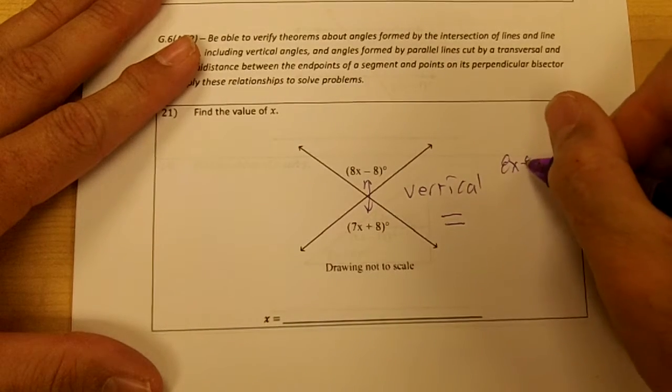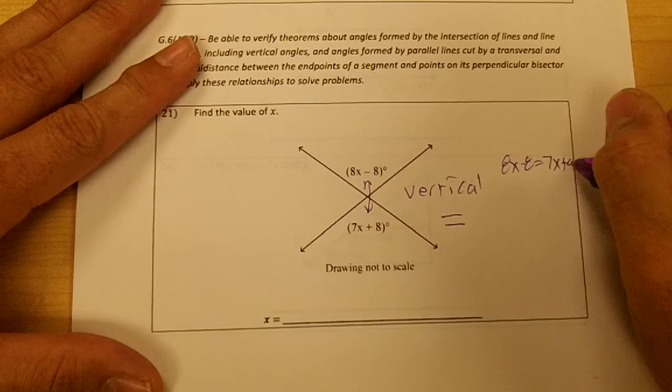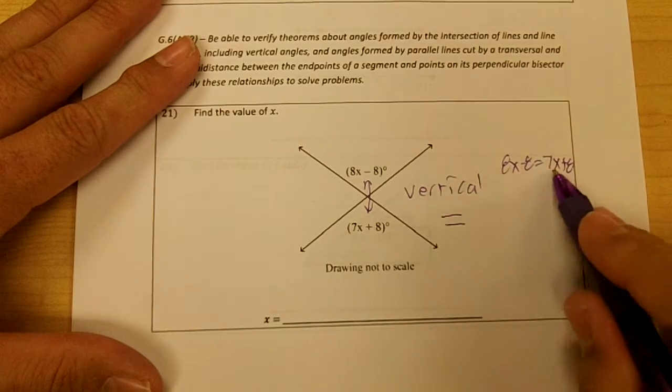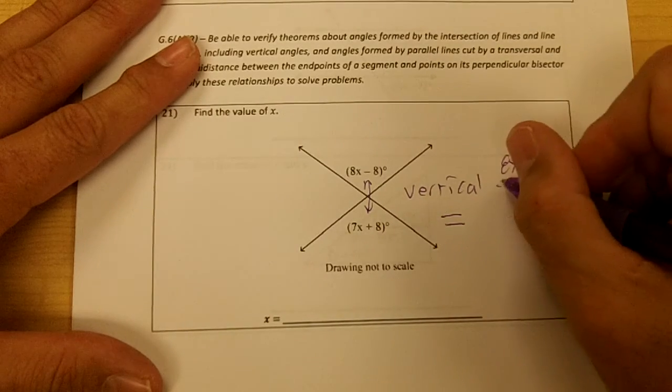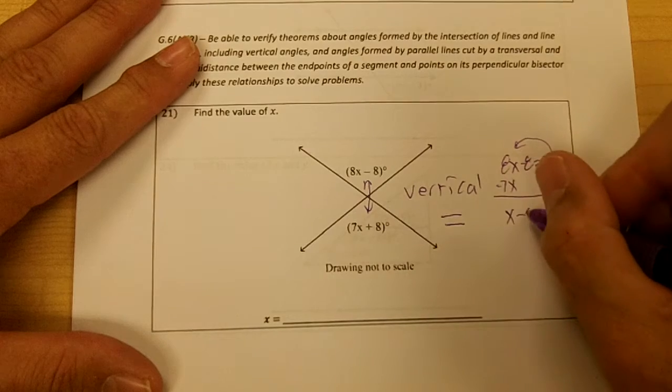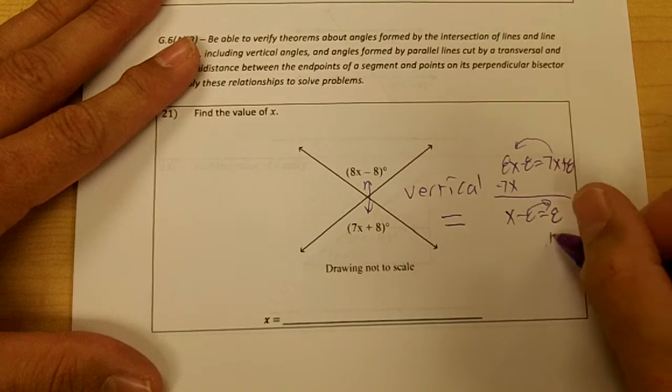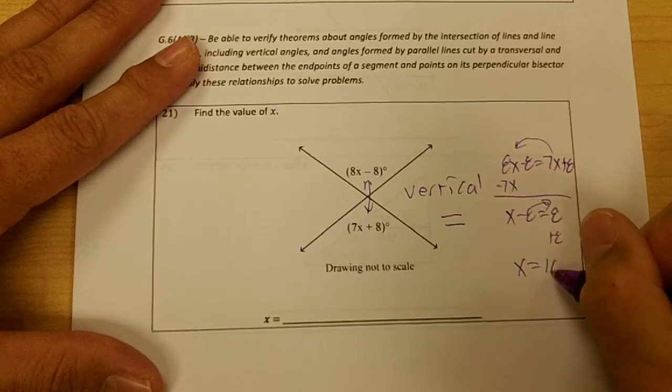So we'll do 8x minus 8 equals 7x plus 8. My smallest x is 7x, so I'm going to move the 7x over here. I'll get x minus 8 equals 8, then move the 8 over. So I will get x equals 16.